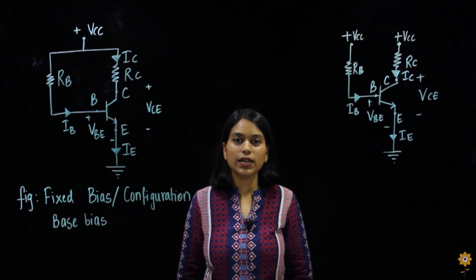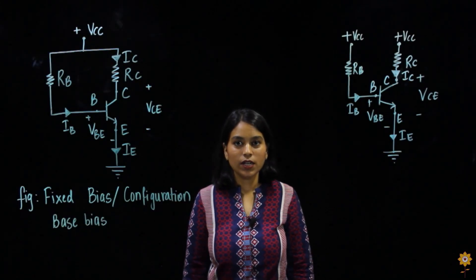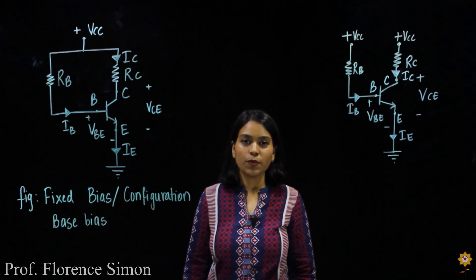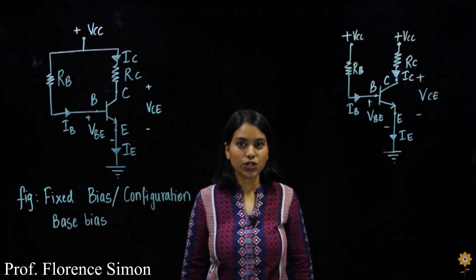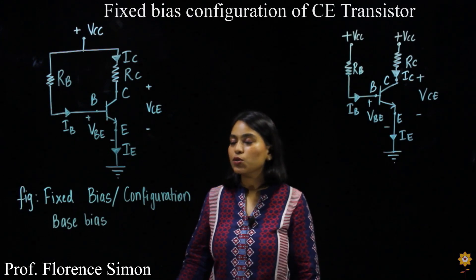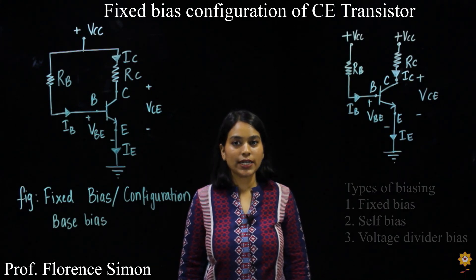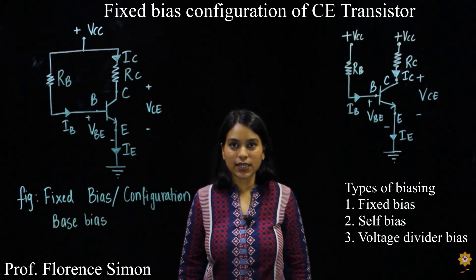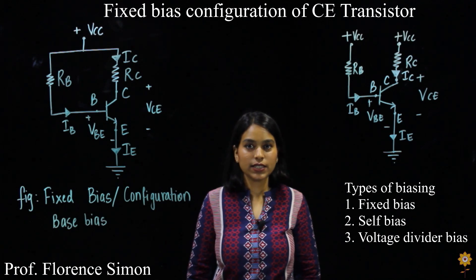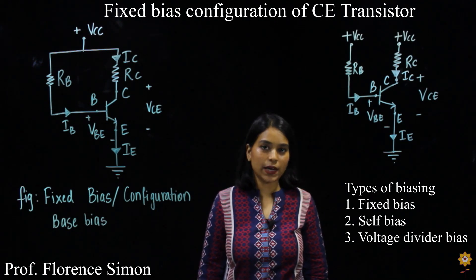Hello everyone and welcome to MES's e-learning channel. In this tutorial we will be learning what is fixed bias configuration of a BJT transistor, which is also called base bias. Basically there are three types of biasing techniques: fixed bias, self bias, and voltage divider bias.